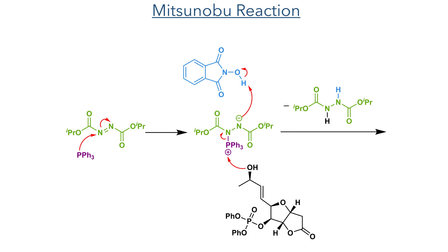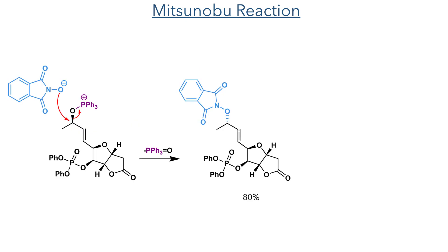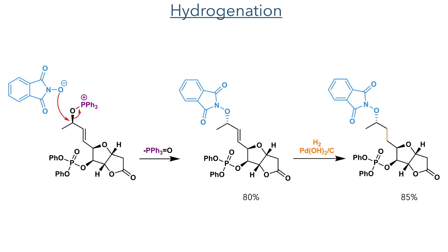This newly formed alcohol then took part in a Mitsunobu reaction. DIAD is first attacked by triphenylphosphine and the resulting anion then deprotonates N-hydroxyphthalimide. The triphenylphosphonium moiety is then attacked by the secondary hydroxyl group which is deprotonated by the diamide. The activated hydroxyl group can then undergo an SN2 reaction with the oxyphthalimide, eliminating triphenylphosphine oxide to form the product with the stereochemistry at the secondary carbon now inverted. The alkene present on the side chain was then reduced using hydrogen gas and Perlman's catalyst in an 85% yield.